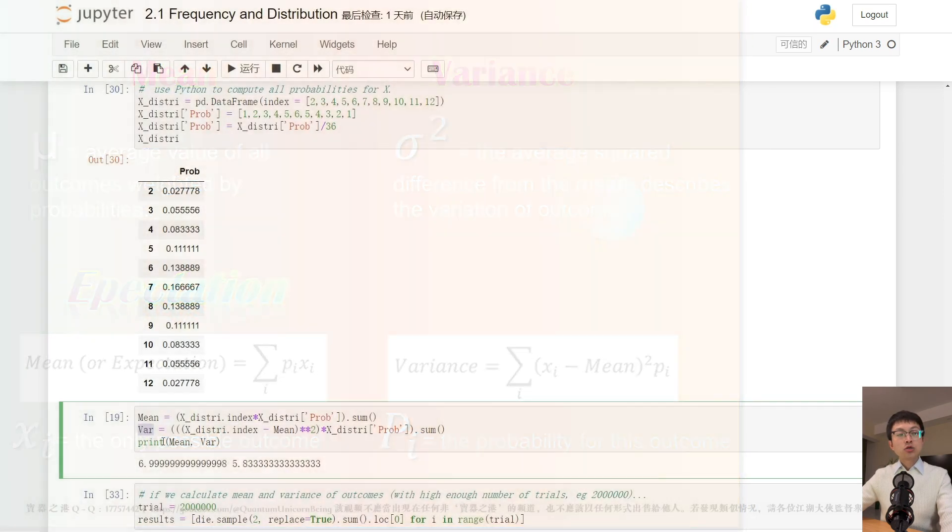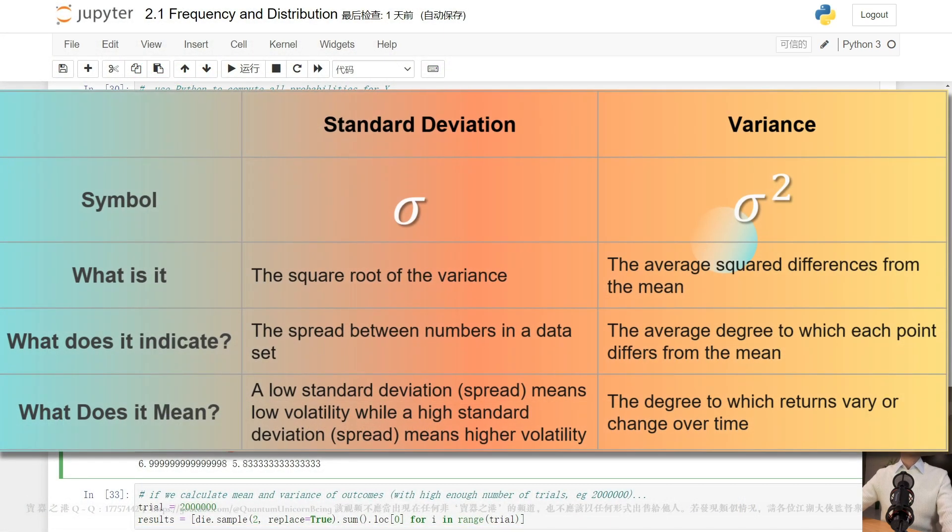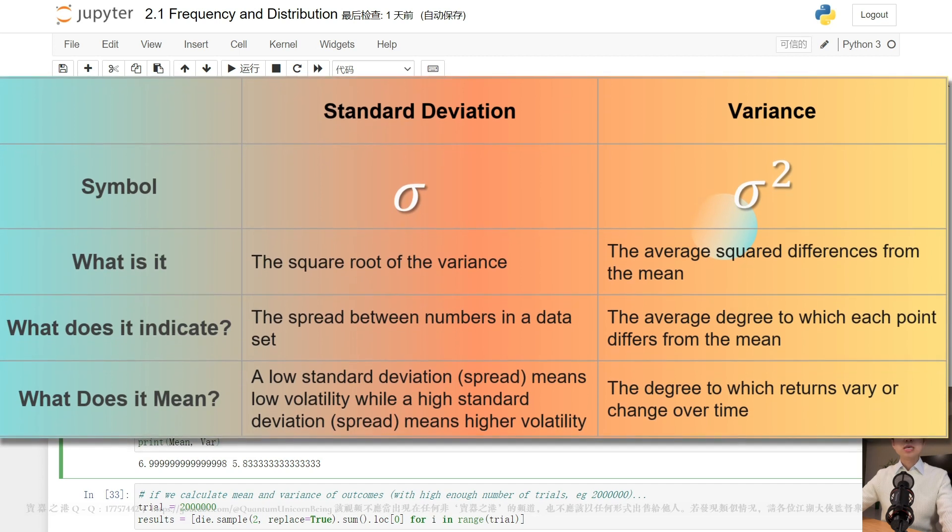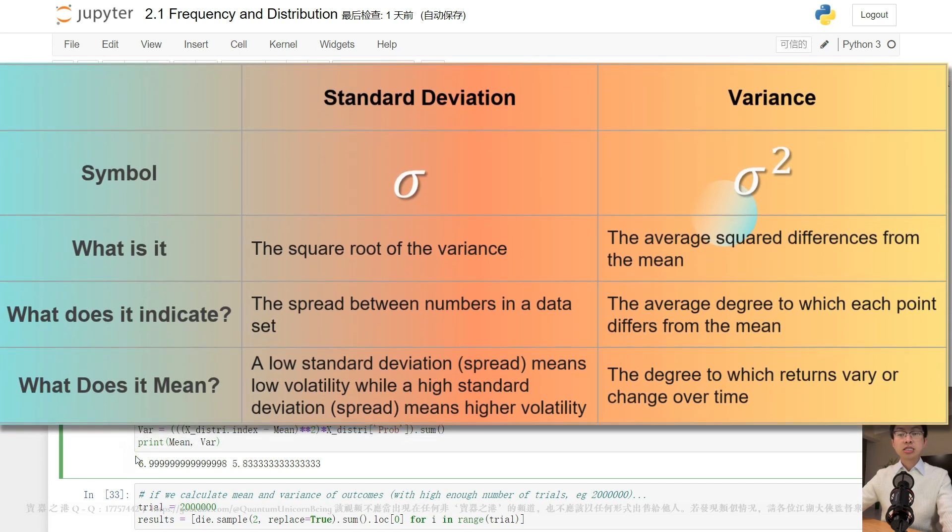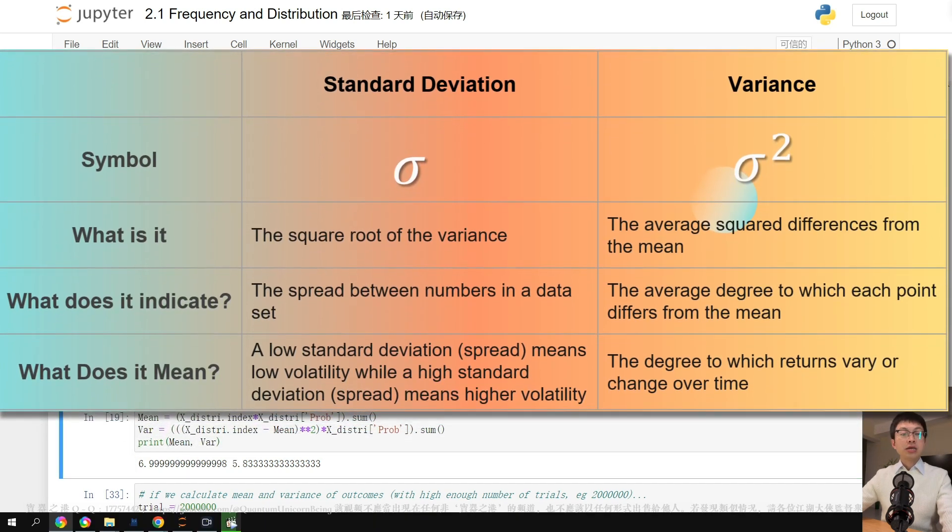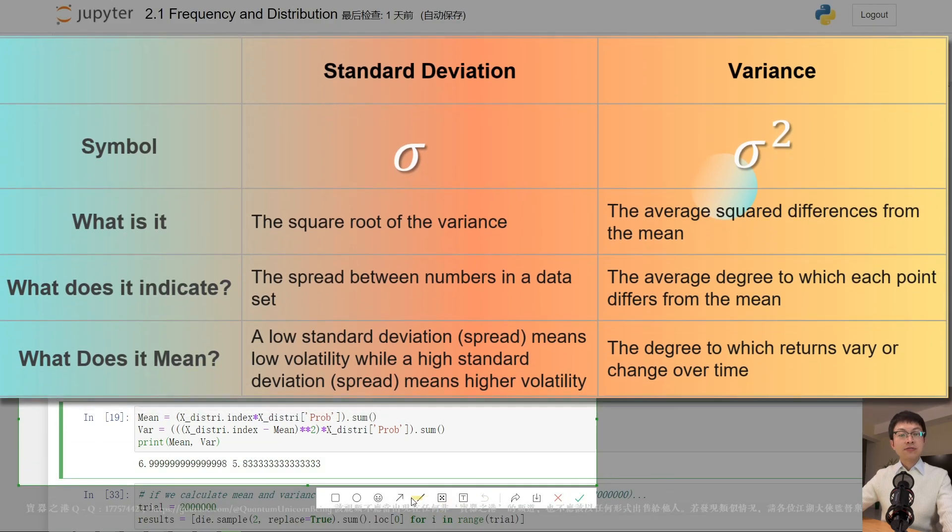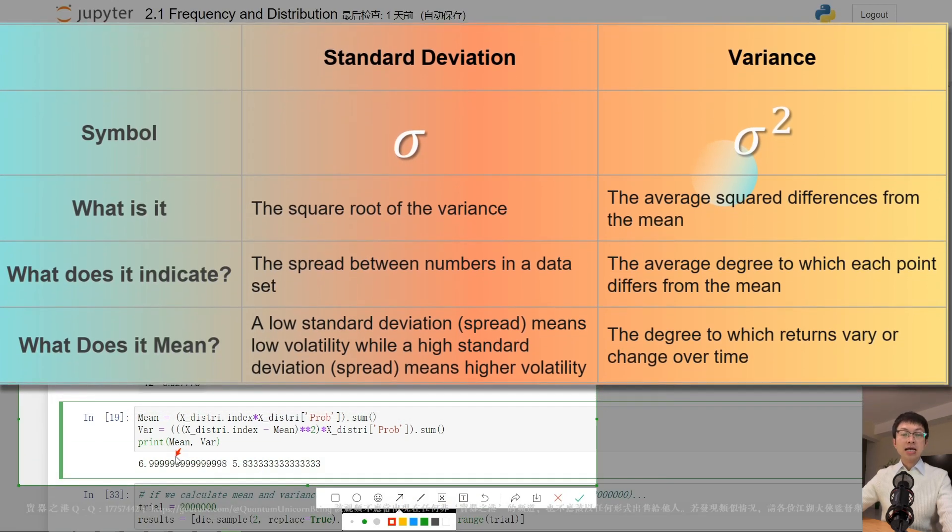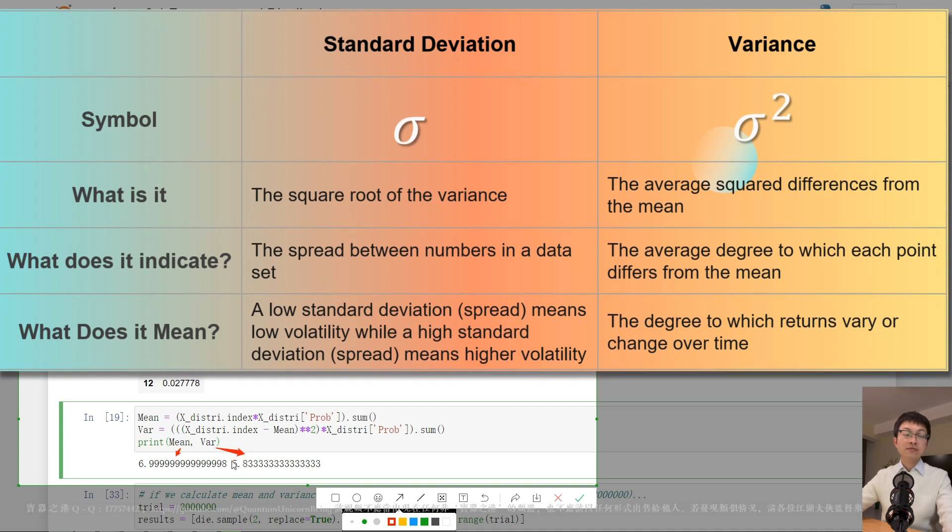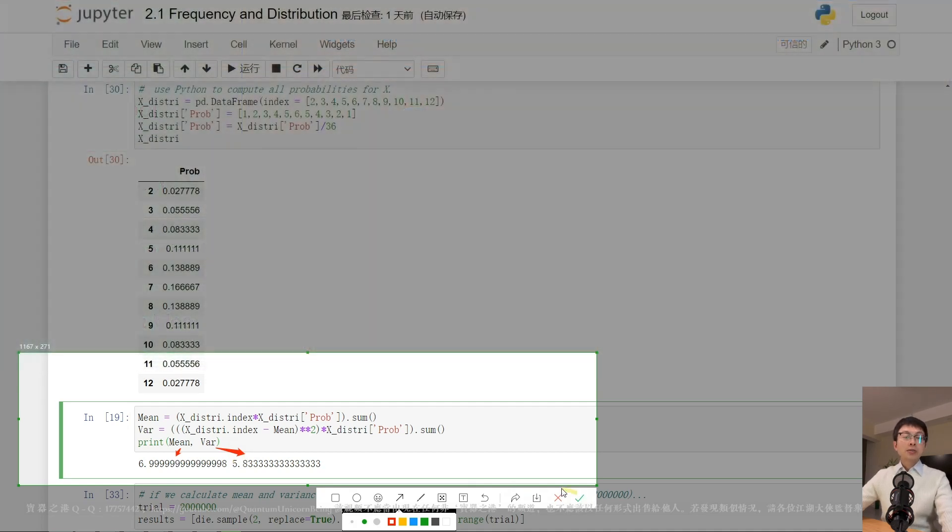Here, let's use the Python code to compute the mean and variance given a distribution table. Here, we can see the results. The first number is mean and the second number is variance.